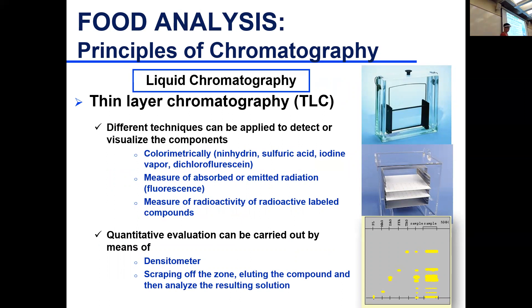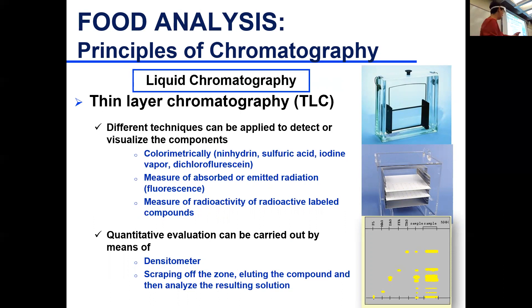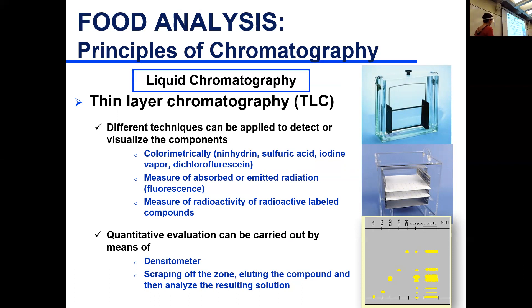Just as with paper chromatography, compounds don't necessarily have a color. For amino acids, you spray with ninhydrin. For other compounds, you can spray with sulfuric acid and they burn, showing spots. Iodine vapor can also give color non-destructively. You can measure absorption or fluorescence — for example, adding dichlorofluorescein gives compounds that fluoresce. You can also measure radioactivity if you have a radioactively labeled compound.